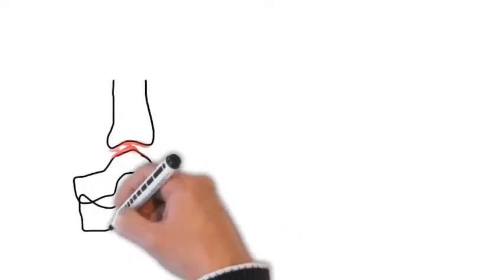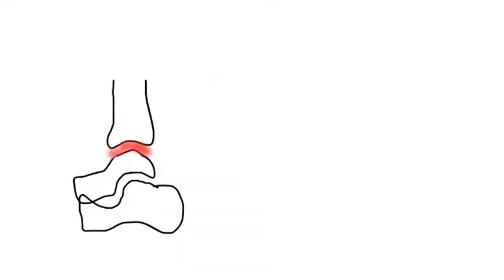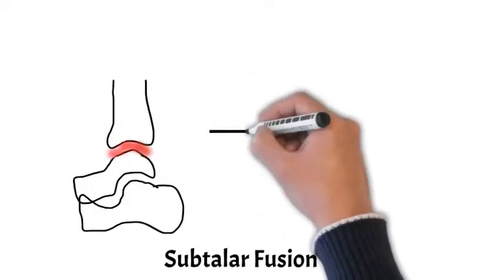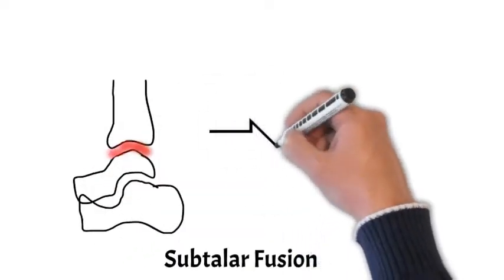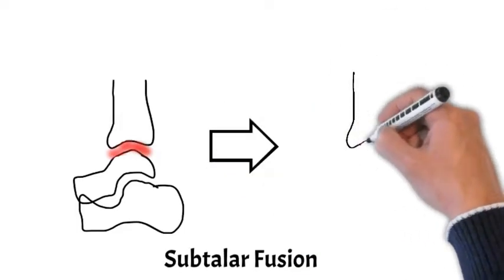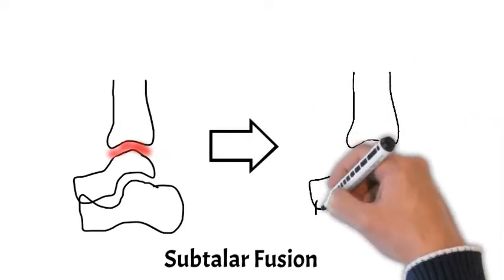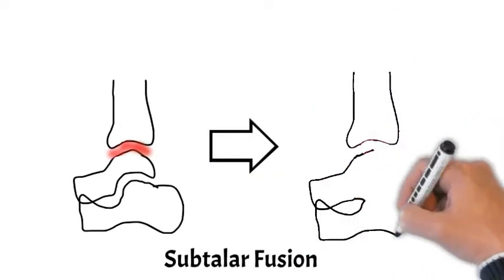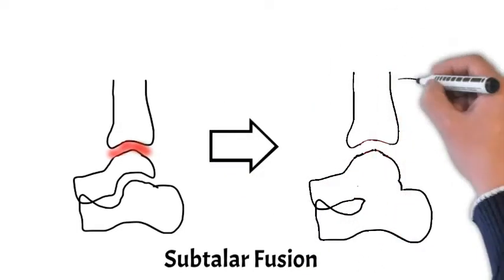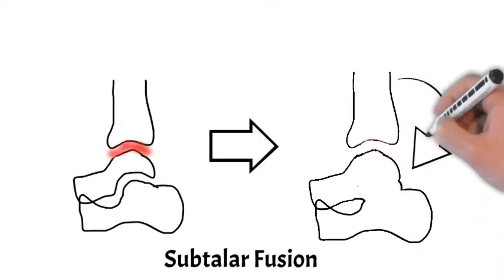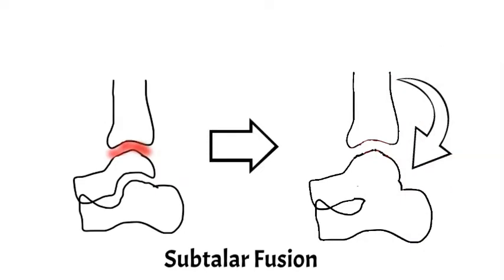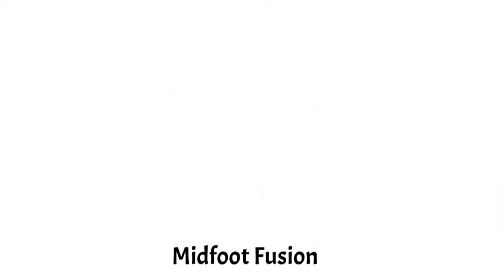Another operation included is called a subtalar fusion, which we've also previously talked about. It basically means that the talus bone and the calcaneus, or heel bone, are made into one bone, as marked on the diagram on the right. These two operations were commonly included as hindfoot operations in the study.